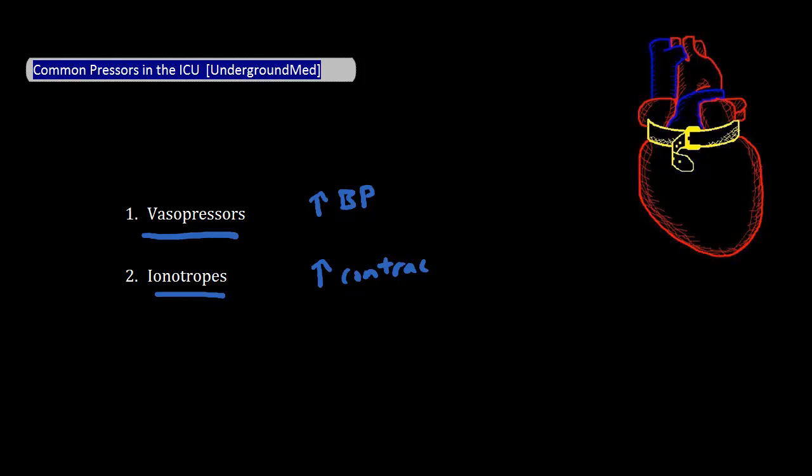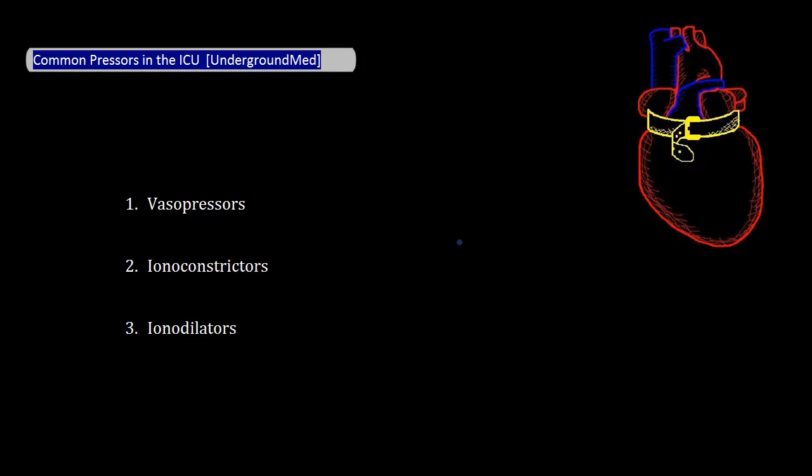One easy way to remember these drugs is to divide them into three categories: vasopressors, ionoconstrictors, and ionodilators, which we'll only briefly discuss here. Let's take one at a time.